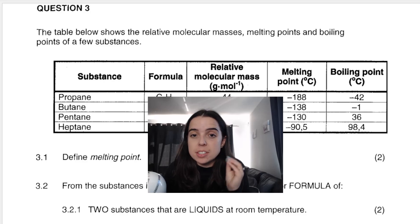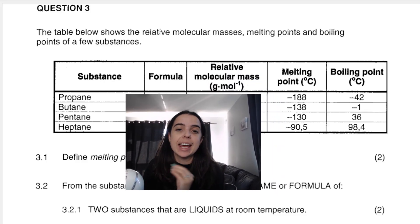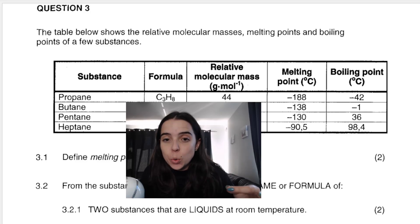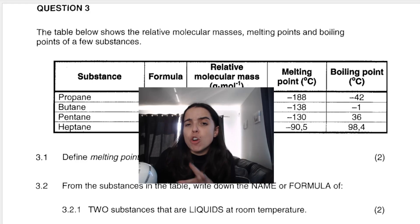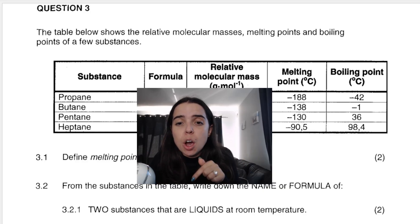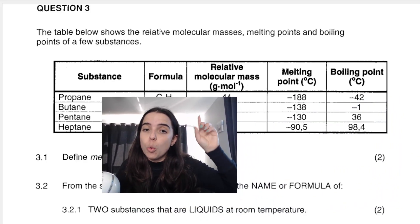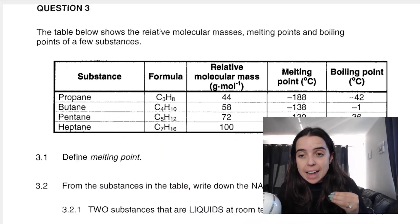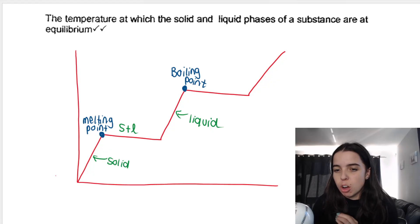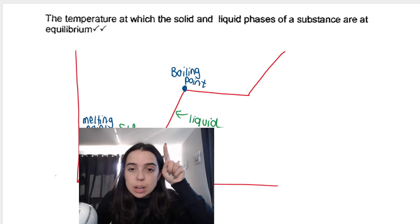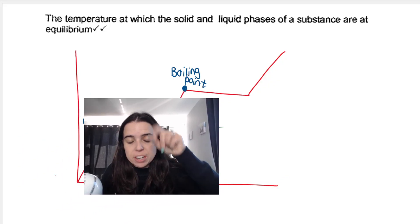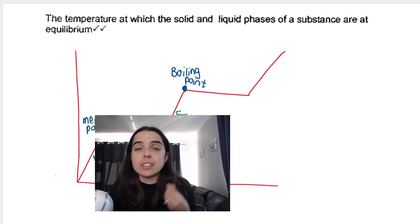The next question says from the substances in the table, we've got propane, butane, pentane and heptane. These are all alkanes which you'll learn about in grade 12. They want two substances that are liquids at room temperature. Now room temperature is arguably around 20 degrees. Some people say 18 to 25 degrees room temperature around there. So we need to look at the melting points and the boiling points to determine which of these substances are in their liquid phase at room temperature. And the reason I drew that curve that I showed you, a reminder of the grade 10 work, is because it helps often to get to the correct answer. So something is a liquid when the temperature is between melting point and boiling point. So between its melting point and its boiling point, that's when a substance is in its liquid phase.